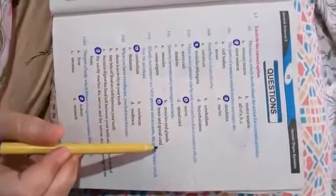Fifth statement: sensory neurons carry messages towards option A muscles, B muscles and glands, C sense organs, D brain and spinal cord. Correct option is D brain and spinal cord.